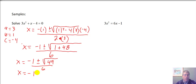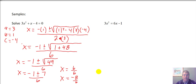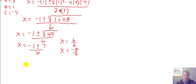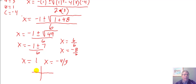x equals negative 1 plus or minus 7, over 6. So x equals negative 1 plus 7, which is 6 over 6, giving x equals 1; and x equals negative 1 minus 7, which is negative 8 over 6, giving x equals negative 4 thirds. So I've solved for the x-intercepts of my parabola — it crosses the x-axis at 1 and negative 4 thirds.